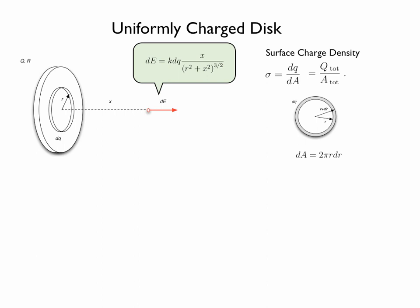So we can write that the area of the ring dA is equal to 2π r dr, where r is the inner radius of that ring.